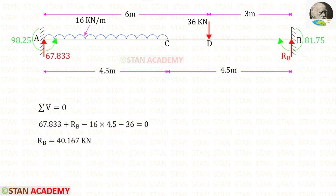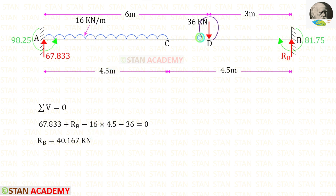Applying sigma V = 0: RA and RB are upward (positive), UDL over distance 4.5 and the point load are downward (negative). For RB we get 40.167 kN.